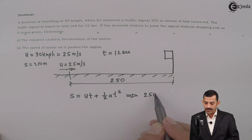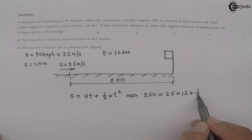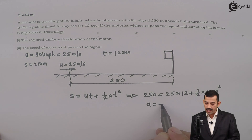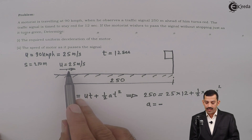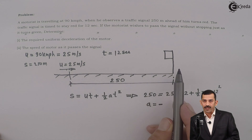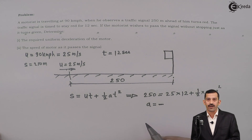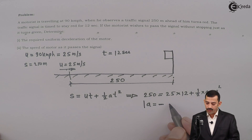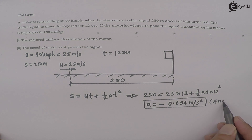Substituting the values: 250 equals 25 times 12, plus half into A into 12 squared. The answer comes out with a negative sign, because if the motor passes with the same velocity it is not possible — deceleration is needed. In the 12-second time interval, when it covers 250 meters, velocity reduces, meaning acceleration is negative. The answer A comes out to be minus 0.694 meters per second squared. This is the required deceleration of the vehicle.